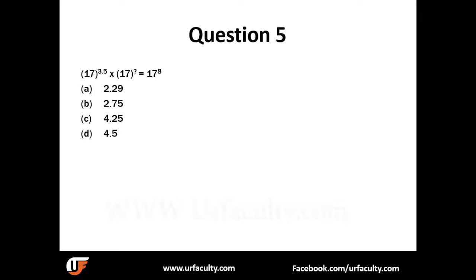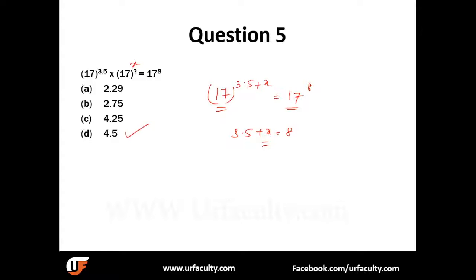Now the questions get more interesting: 17 to the power of 3.5 multiplied by 17 to the power of x equals 17 to the power of 8. Since the base is the same, we add the powers: 3.5 plus x equals 8, therefore x equals 4.5.